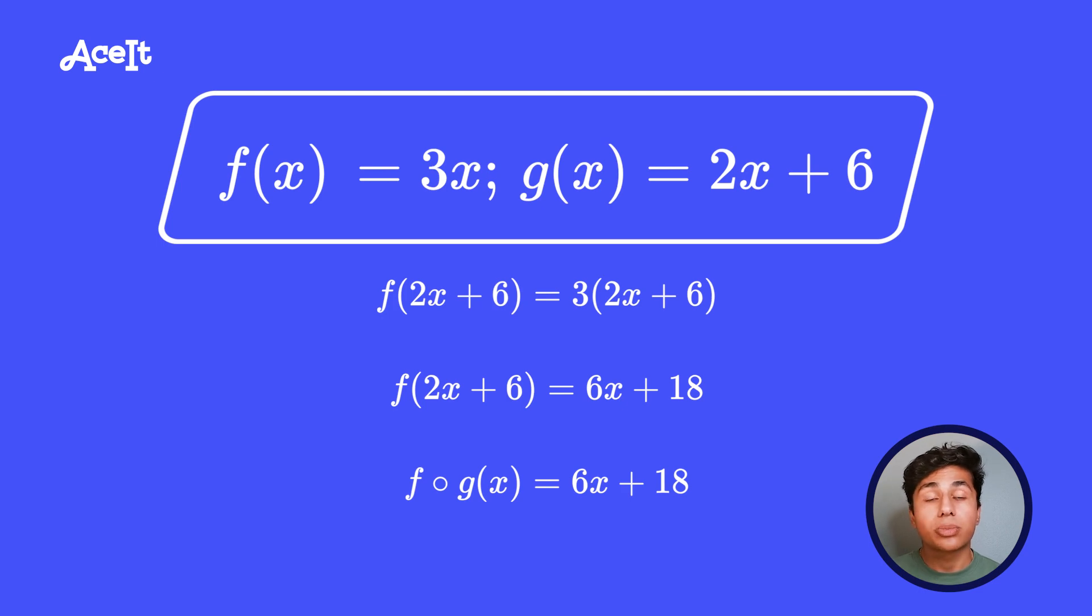So that would give us 3 times 2x plus 6, which is 6x plus 18. So in this case, f of g of x is 6x plus 18.